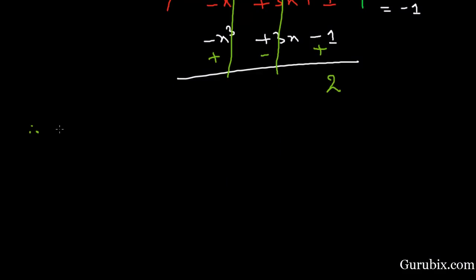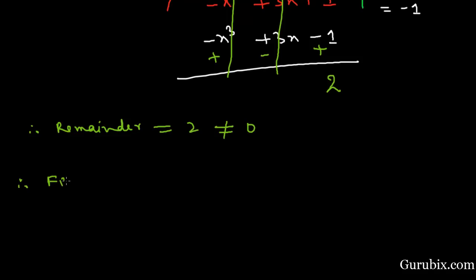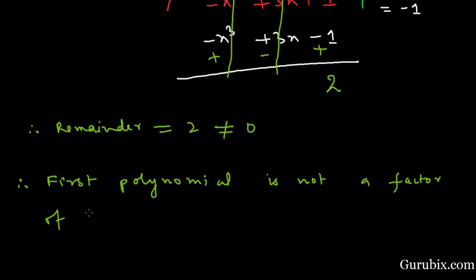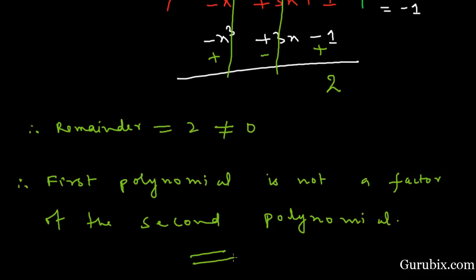This means the remainder is 2, and this 2 is not equal to 0. Therefore, the first polynomial is not a factor of the second polynomial. So this is the solution of the question. Thank you.